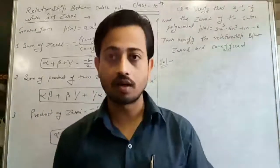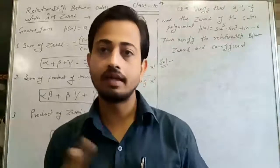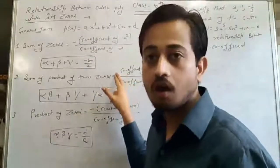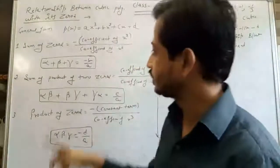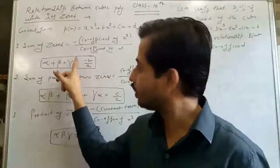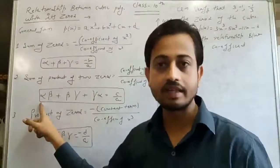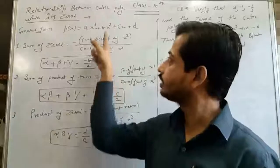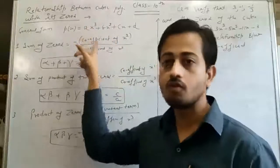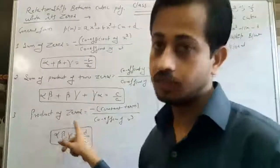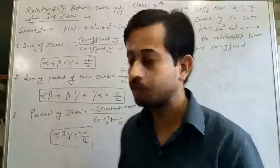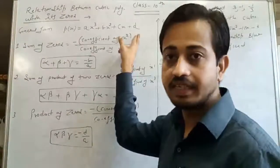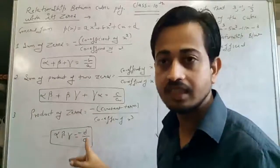Second relation is sum of product of two zeros: alpha·beta plus beta·gamma plus gamma·alpha, which is equal to C by A, where C is the coefficient of X and A is the coefficient of X³. Third relation is product of zeros: alpha into beta into gamma, which is equal to negative D by A, where D is the constant term and A is the coefficient of X³.